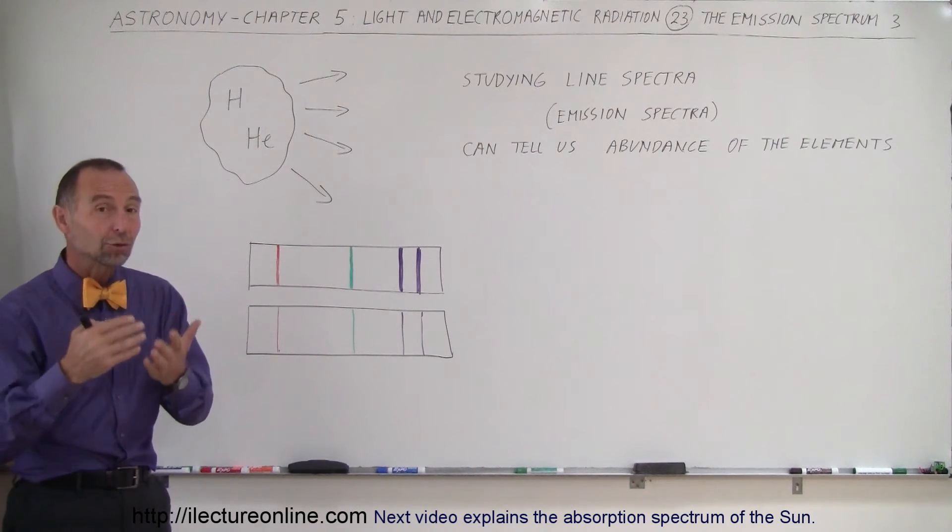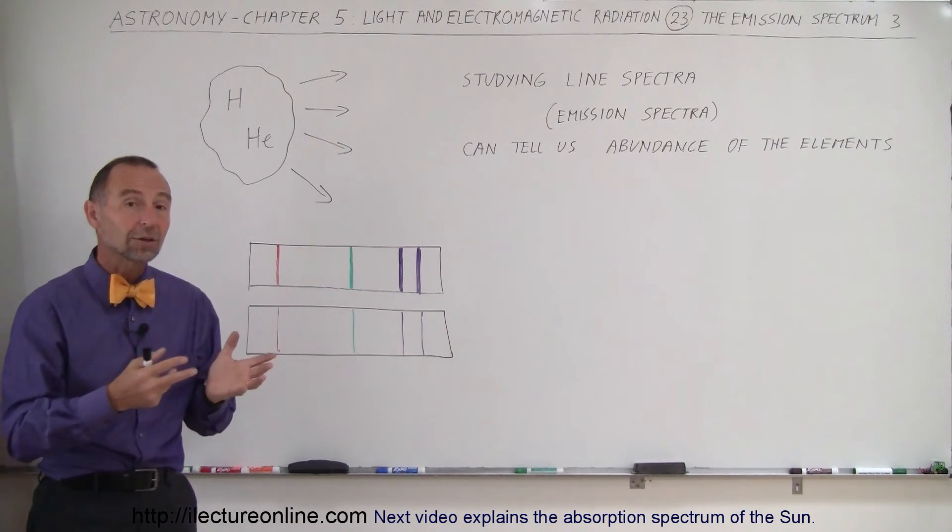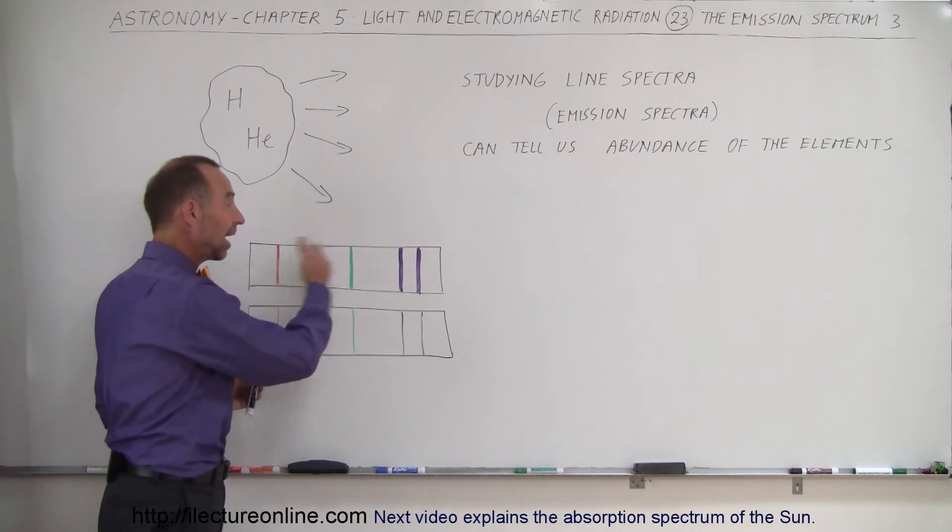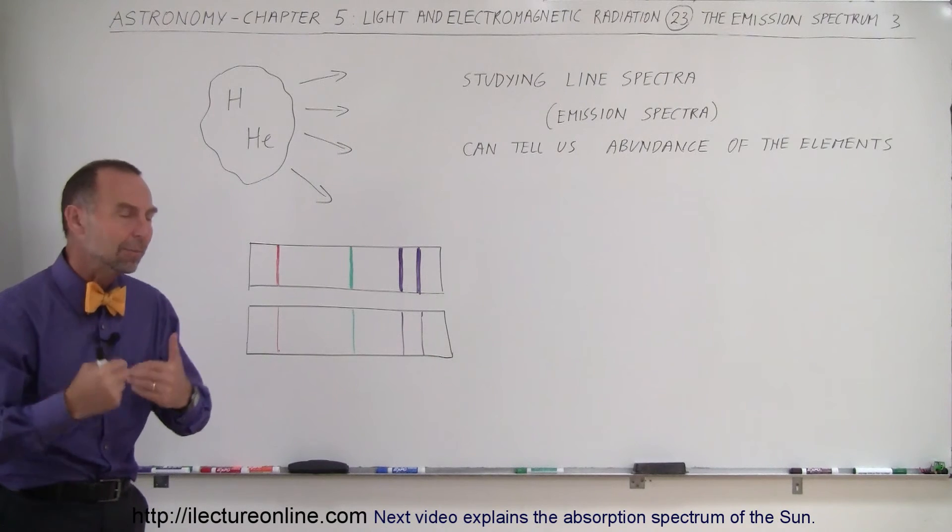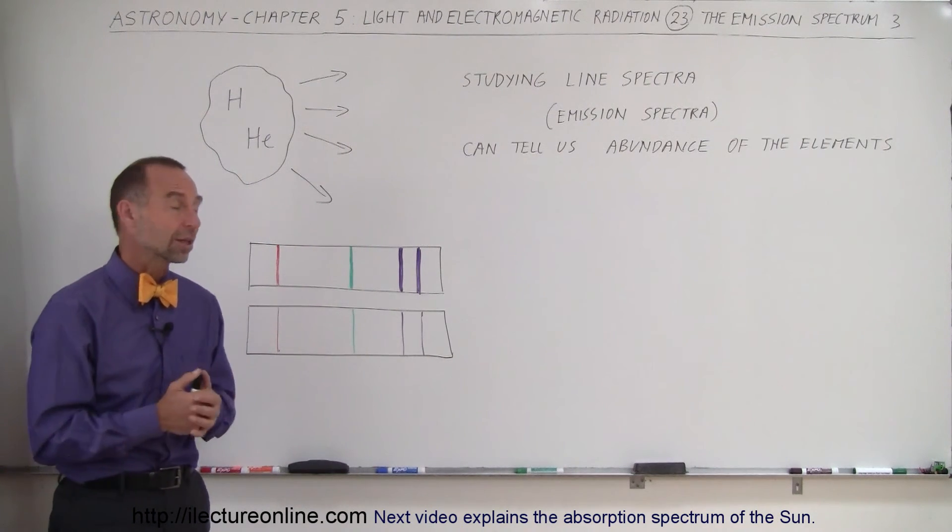Another great tool for astronomers is to compare the intensity of those lines from one nebula to another. Therefore, sometimes we realize, oh look, there's lots of hydrogen in that nebula. Or wow, there's actually not that much hydrogen in there—there's more of the other elements present.